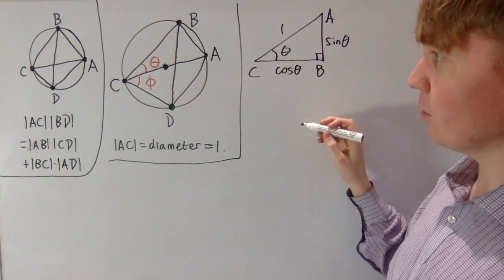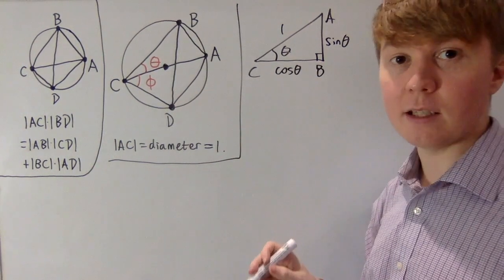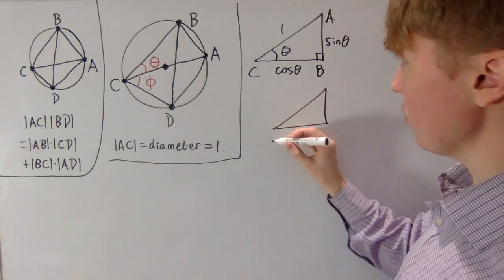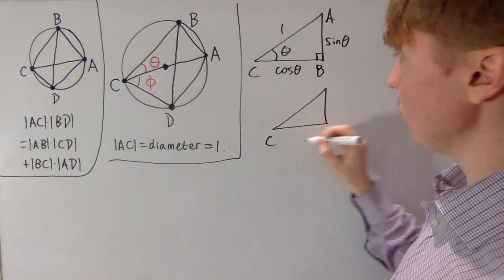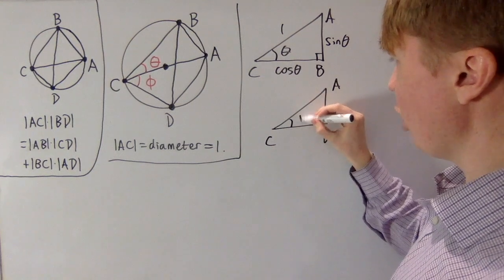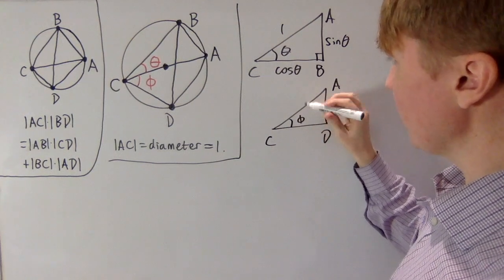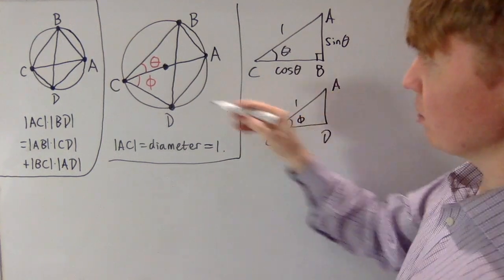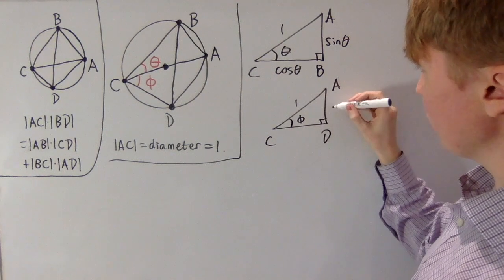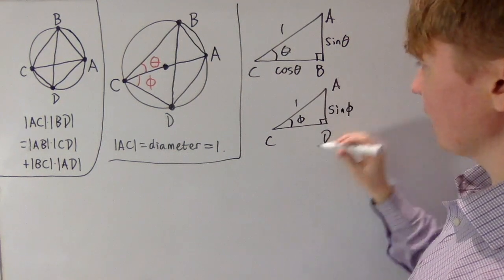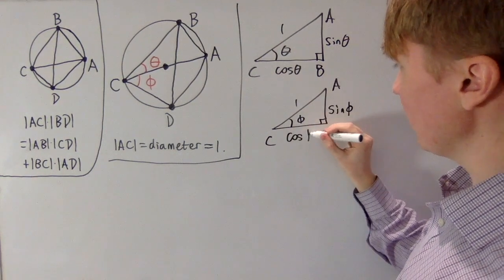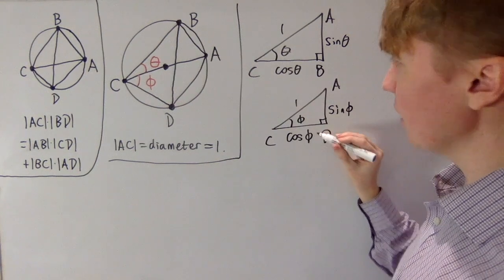We can draw something very similar for triangle ACD. With vertices C, D, and A, and angle phi, we know the hypotenuse — the diameter — is 1. We have a right angle, so sine phi gives us the length AD, and cos phi gives us the length CD.